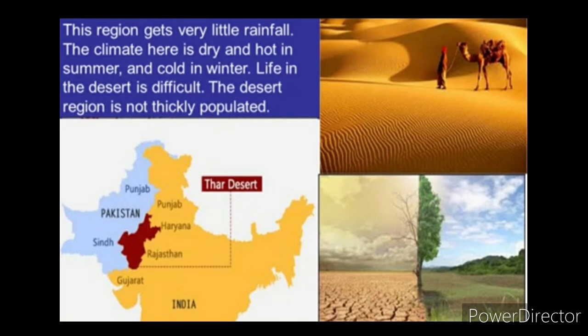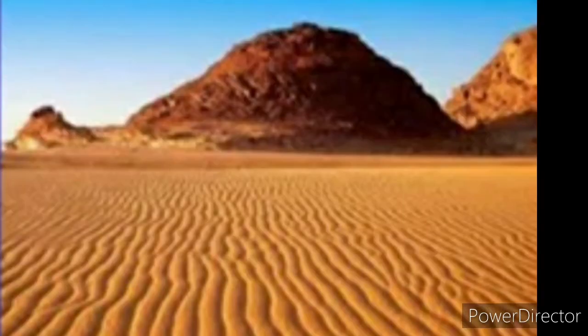A large area of land covered with sand is called a desert. It gets very little rainfall and there is not much vegetation. Deserts are very hot. The great Indian desert is known as the Thar Desert.